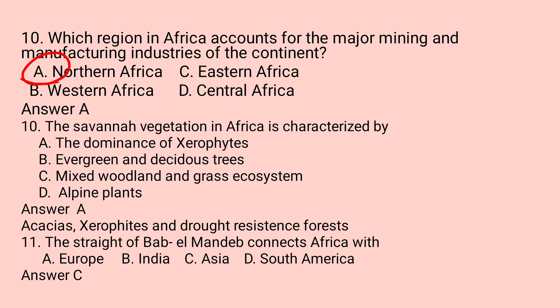Question number eleven: The savanna vegetation in Africa is characterized by — A. Dominancy of xerophytes. B. Evergreen and deciduous trees. C. Mixed woodland and grass ecosystem. D. Alpine plants. The savanna region is known for plants like acacias and xerophytes, which have the capacity to resist drought and harsh environmental conditions. So the answer is A.